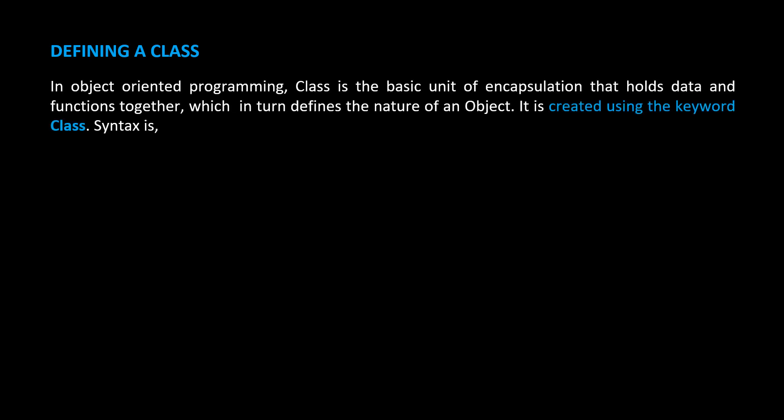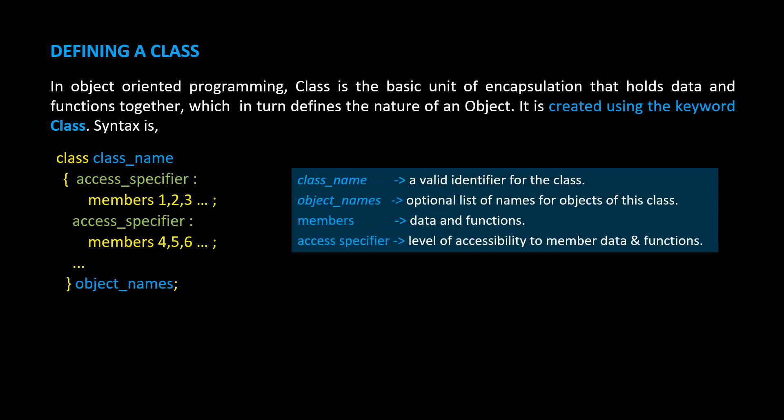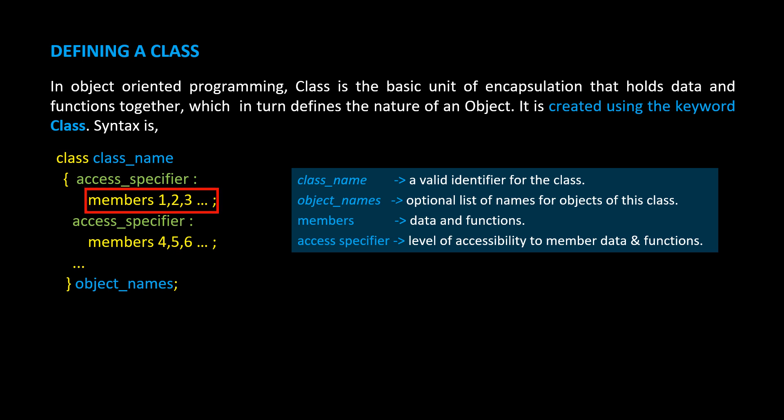Our next topic is about defining a class. As we already know in OOP, a class is the basic unit of encapsulation that holds data and functions together, which in turn defines the nature of an object. It is created using the keyword 'class'. The class name is a valid identifier, object names is an optional list of names for objects of this class, and members are the data and functions declared in this class.